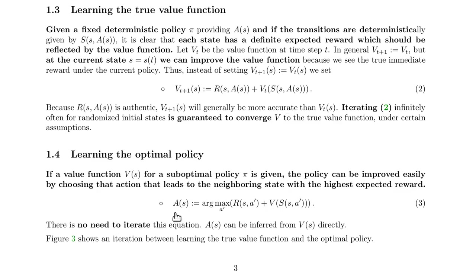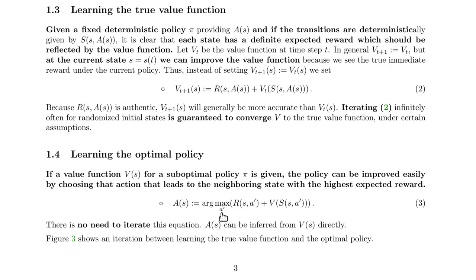This is expressed by an equation: the action that the agent takes in state s should be the one that gives the maximum expected reward. The maximum is taken over all possible actions A', and the expected reward is the value of the state the agent ends up in after taking that action plus the reward received on the way. The agent simply figures out the optimal action based on this — no real learning is required here, it can be done right away.